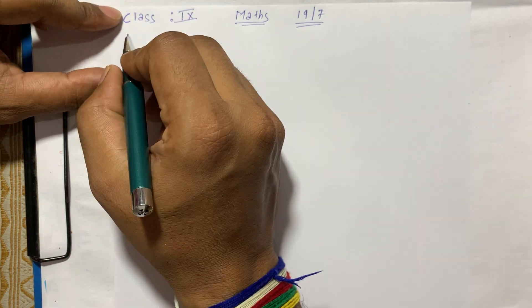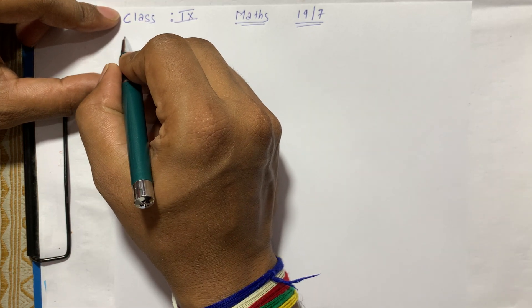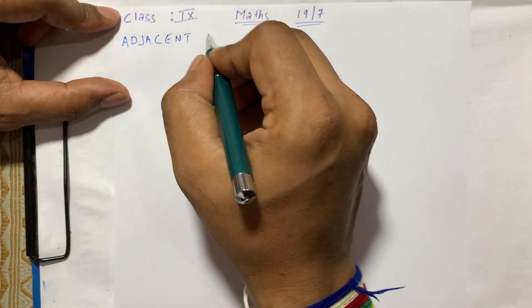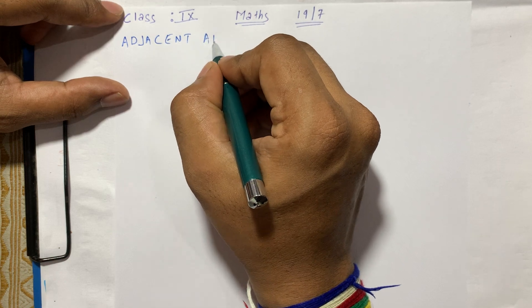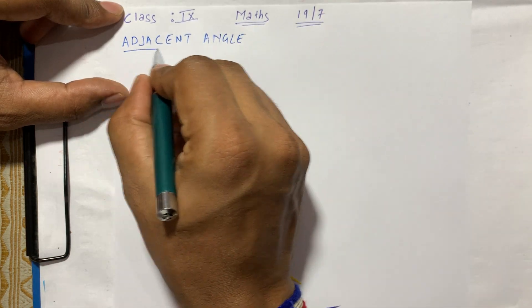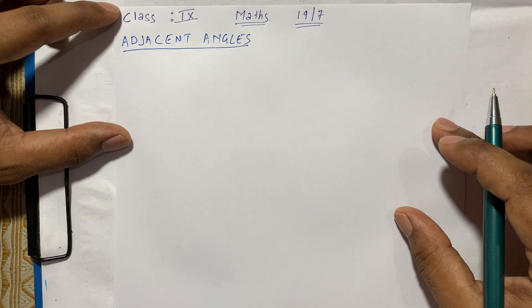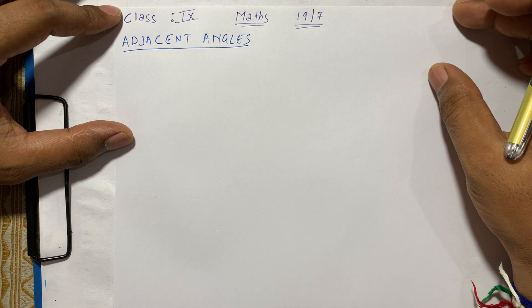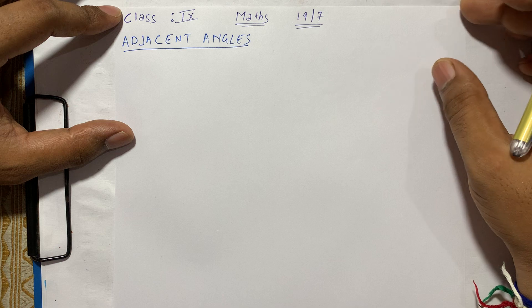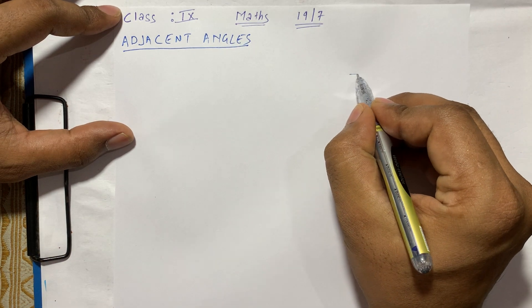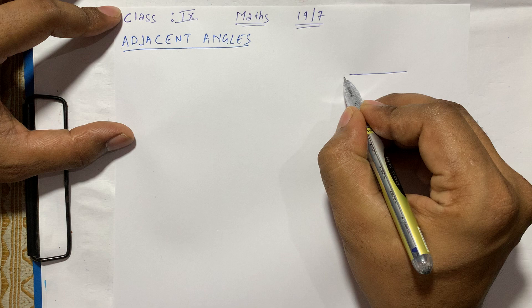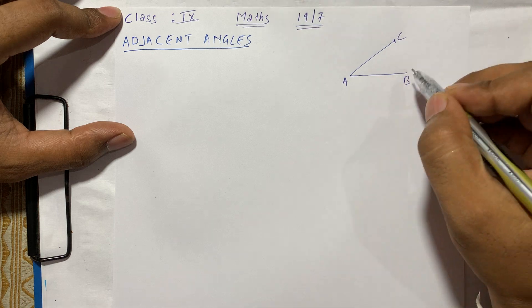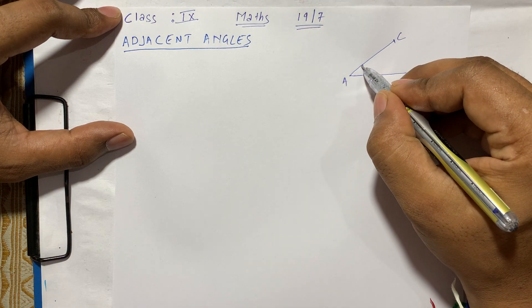The very first type we are going to discuss today is the adjacent angle. Now, try to understand what the adjacent angle means. As you know, for making angles we require two straight lines. Suppose one line is AB and another line is AC. So here, angle ABC is a kind of angle.